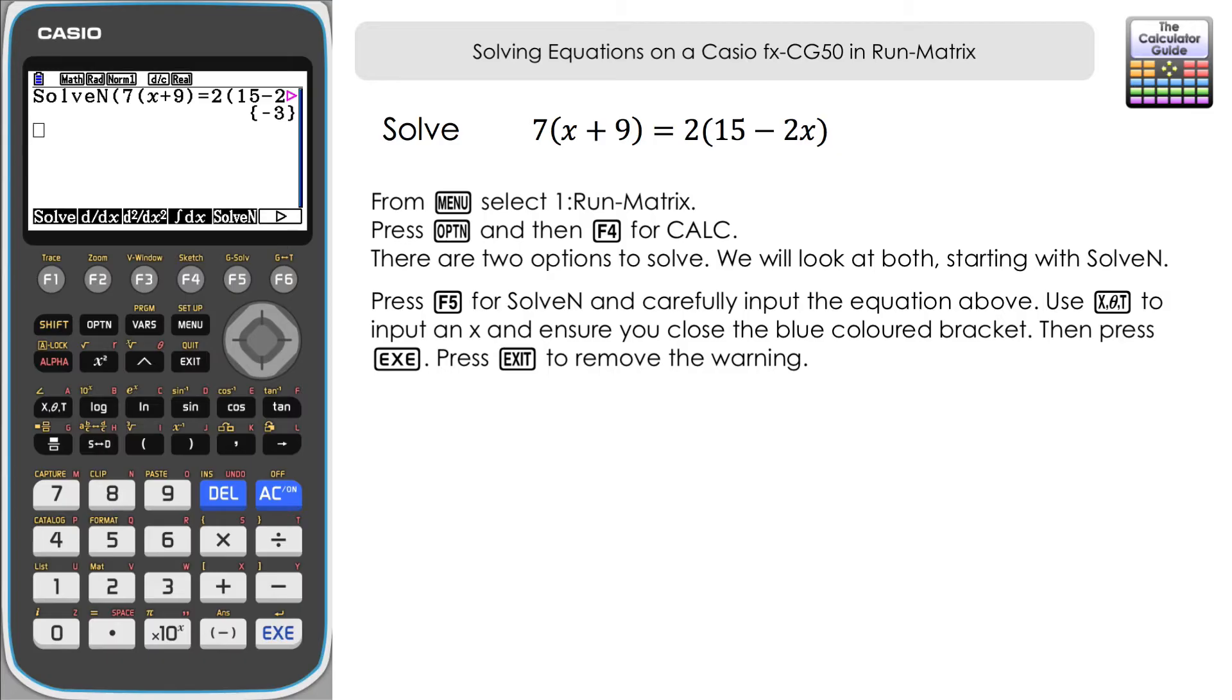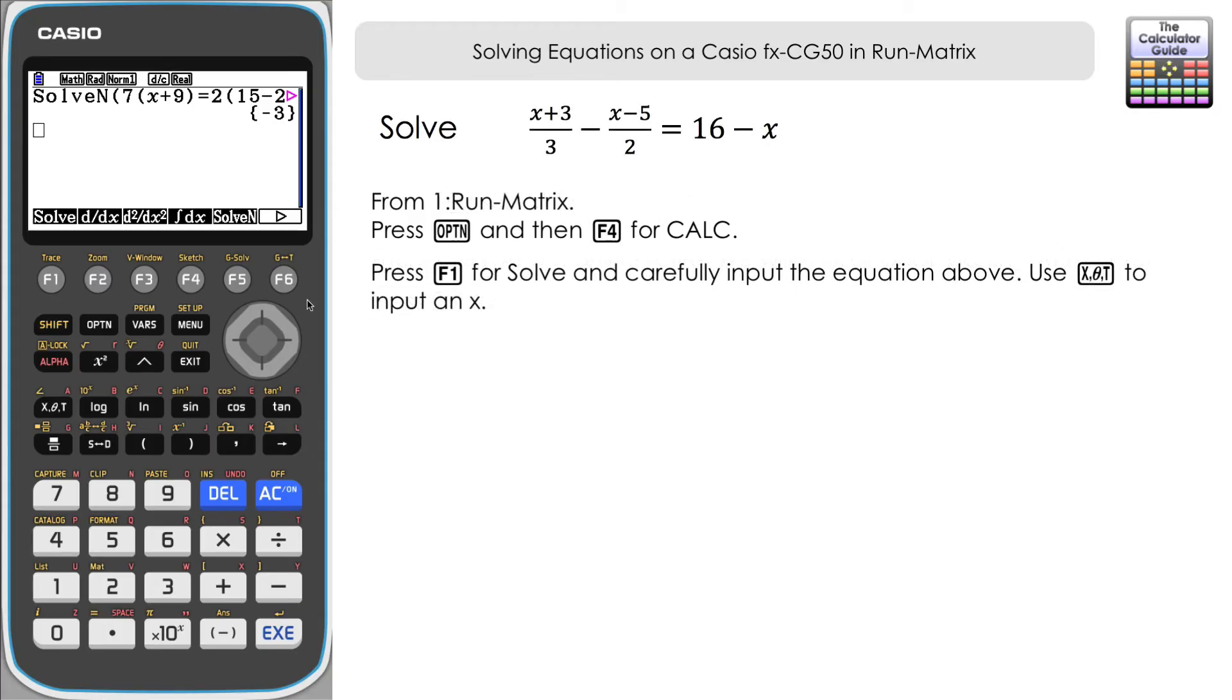Let's have a look in a little bit more detail then at the solve feature option F1. We'll return to SolveN for some later ones for simplicity. Let's have a look at Solve. We'll look at the second example and press Solve first. It's opened up the blue brackets again and we're going to input this example: (x+3)/3 - (x-5)/2 = 16-x. I've just sped the video up slightly there. You just need to make sure you take your time and input it accurately.